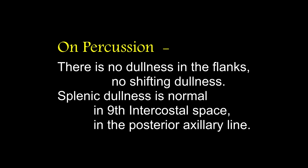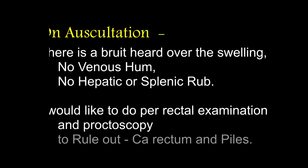There is no dullness in the flanks or shifting dullness. Splenic dullness is normal in the 9th intercostal space in posterior axillary line. On auscultation, there is a bruit heard over the swelling. No venous hum, no hepatic or splenic rub. In which conditions do you hear a bruit over the liver? Primary hepatoma. It may occasionally be heard over regenerating nodules of cirrhosis and over AV malformations.